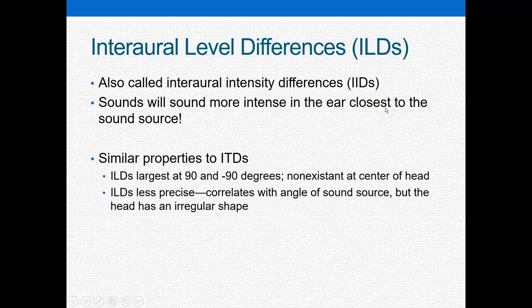Now let's talk about interaural level differences, or interaural intensity differences — you can call them an ILD or an IID. Just as with an interaural timing difference, certain sounds will hit one ear before they hit the other ear. Here, sounds will sound louder or more intense in the ear that is closest to the sound source — louder in one ear than the other. Similar to what we found with ITDs, the largest level differences will occur at 90 and negative 90 degrees. The largest level differences happen at the right ear and the left ear, and are generally non-existent at the center of the head, either in the front or the back.